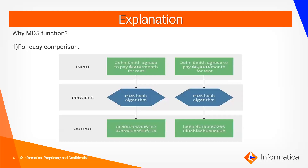Why do we need to use an MD5 function in PowerCenter? We use it basically for comparison, to make the comparison easy. For example, in an SCD Type 2 mapping — if we are getting a row from the source which is already present in the target, we simply neglect that source record. To compare the target and source data, we use MD5 as a medium.